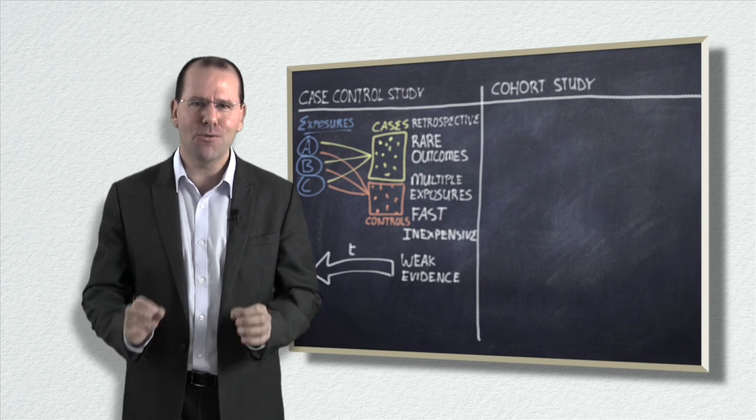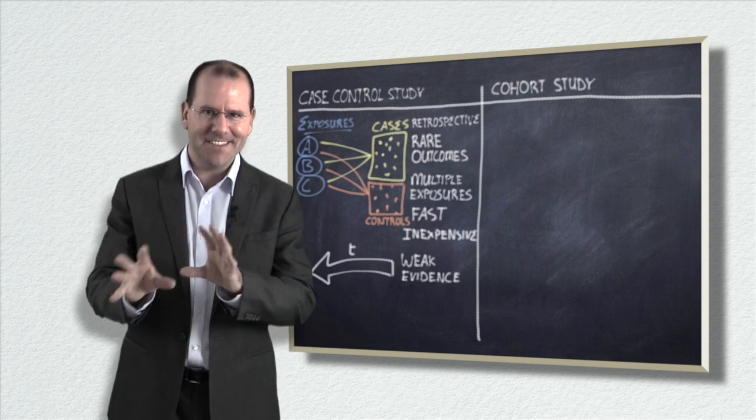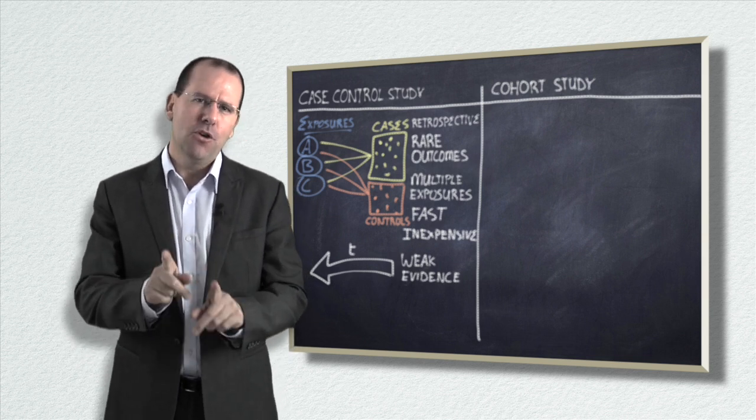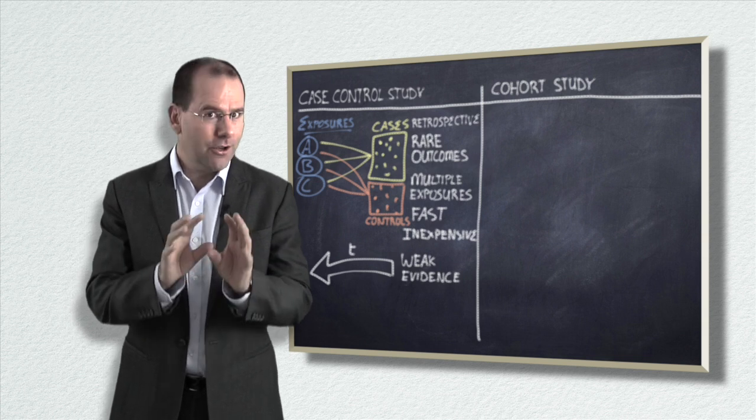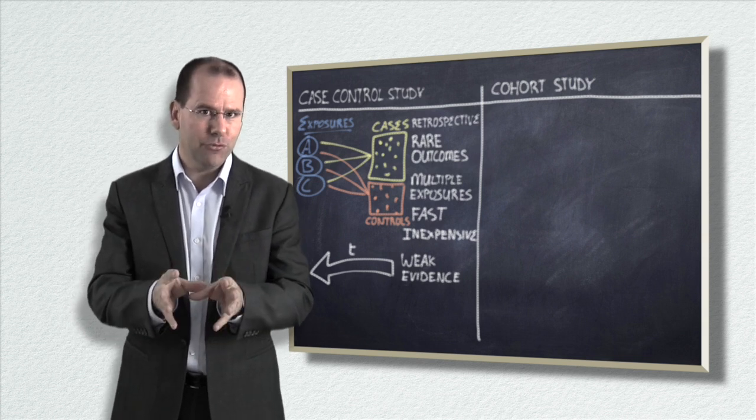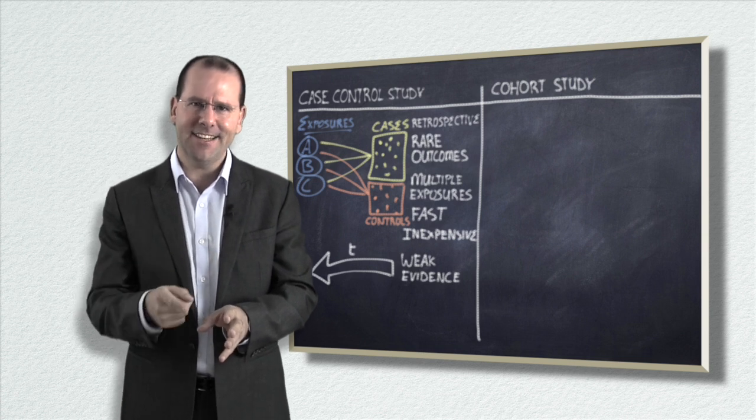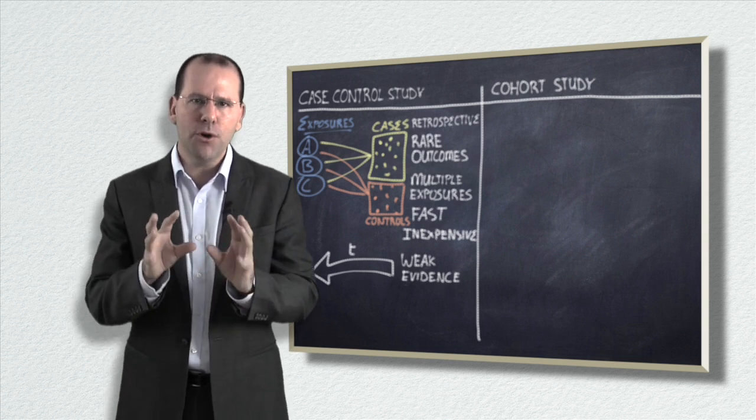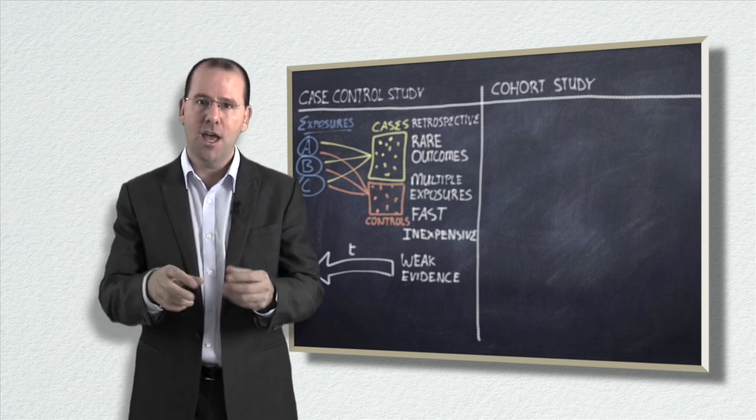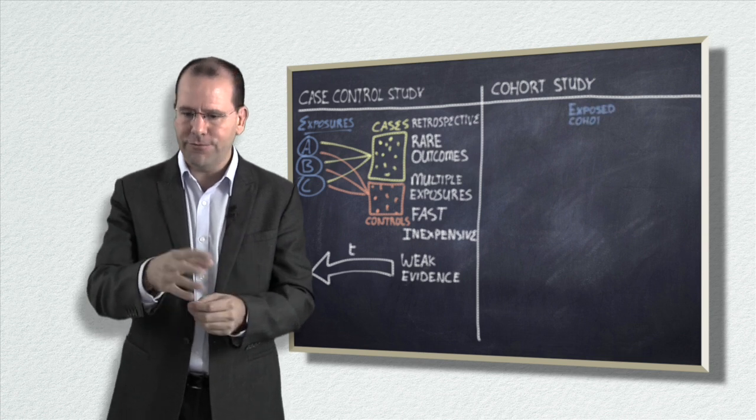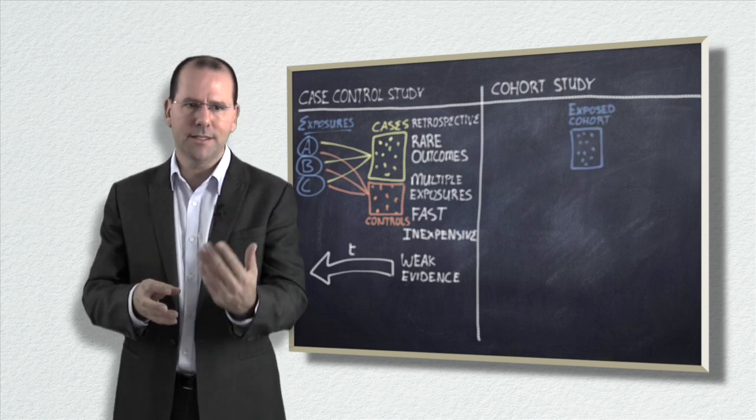Now let's talk about cohort studies. I want you to understand the difference between these two studies. Remember when we talked about a case control study, we started with outcomes of interest, sometimes a rare outcome, and we looked back in time at multiple exposures. The cohort study is exactly the opposite. We start off with an exposure of interest, so it might be a rare exposure. There's just a few people in the world that have been exposed to something that's unusual.